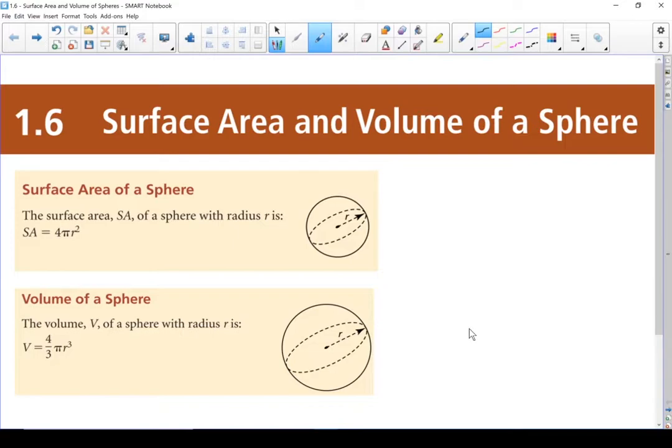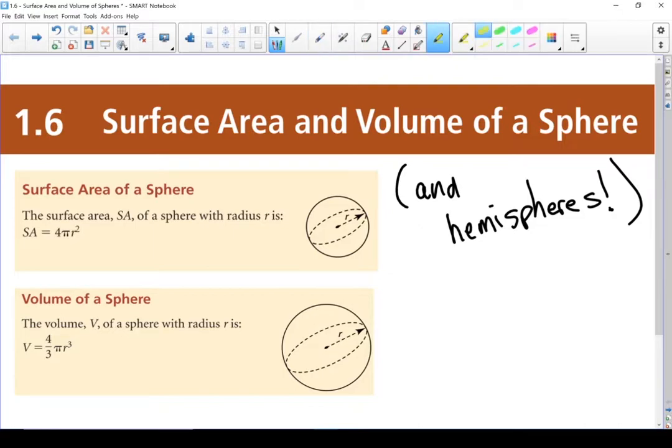1.6. Surface area and volume of a sphere. Here we've got our two formulas that we're going to be using. Surface area of a sphere is 4 pi r squared. Volume of a sphere is 4 thirds pi r cubed. Let's do some questions.